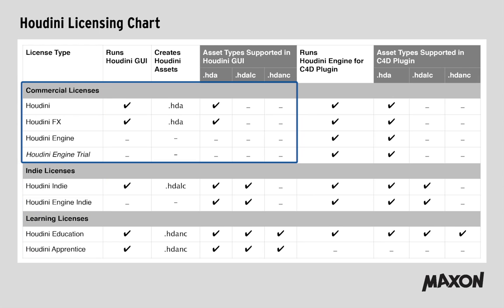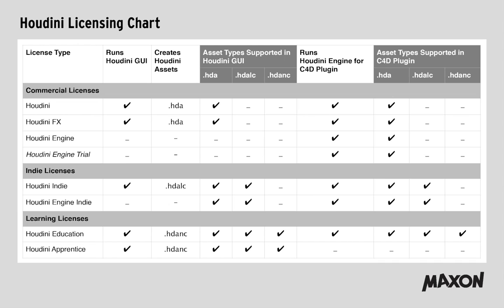The commercial license — Houdini FX and Houdini — can create assets with the extension HDA, which stands for Houdini digital asset. The limited commercial Houdini Indie can create assets with the file extension HDALC, which stands for Houdini digital asset limited commercial.